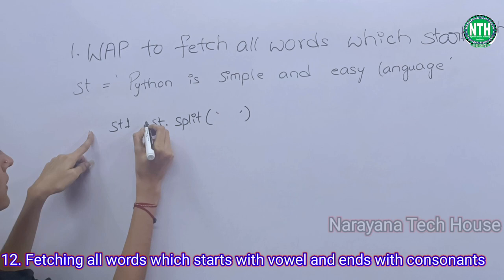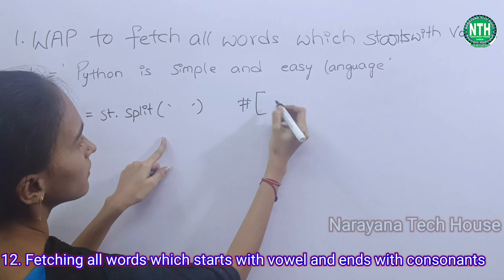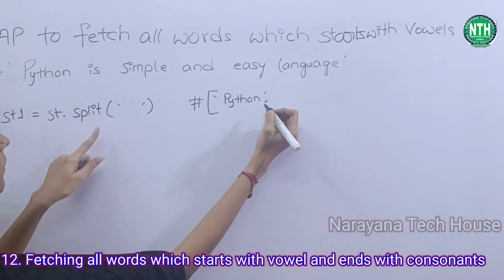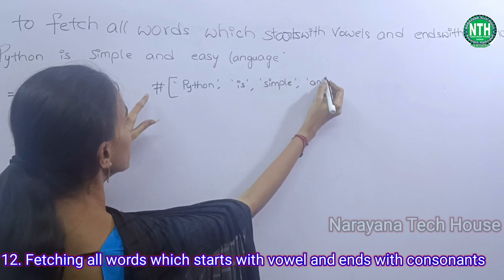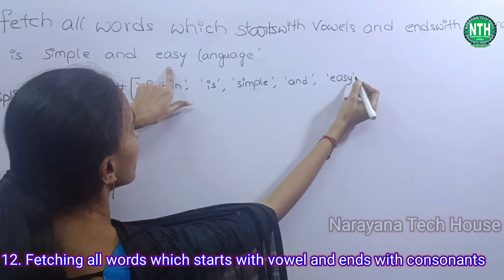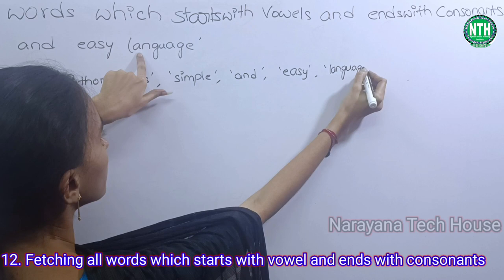It displays in list format, like: Python, easy, simple, and easy language. After splitting, it displays like this.